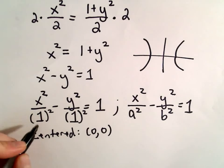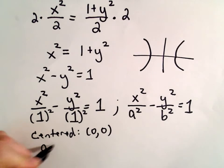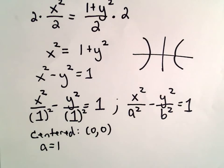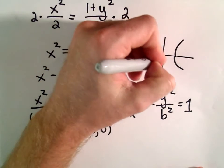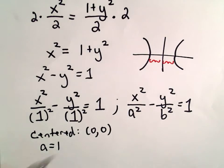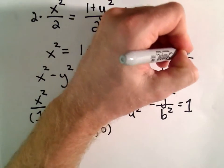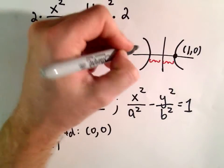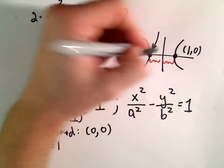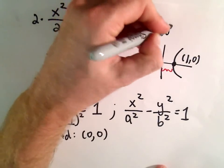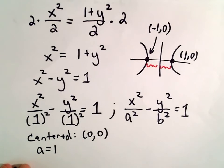The value underneath x squared, since it's 1 squared, that tells me that a equals 1. And a equals 1, that's simply the distance from wherever it's centered out to one of our vertices. So that tells me that the vertices are, in fact, going to be at 1, 0 and also at negative 1, 0. Okay, so we've got that much.